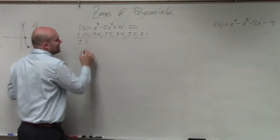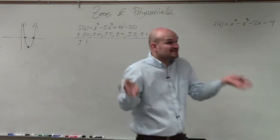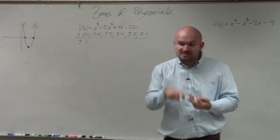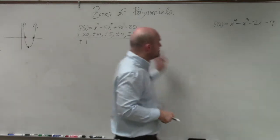And that's all over really plus or minus 1. So if I have a real zero, a real rational zero, not irrational, not complex, a real rational zero, it's going to be one of these numbers.